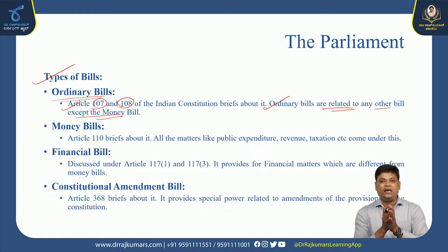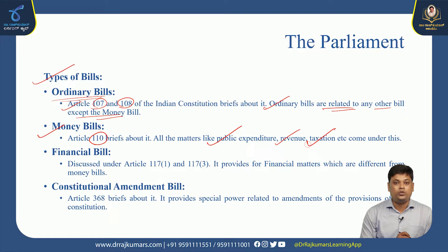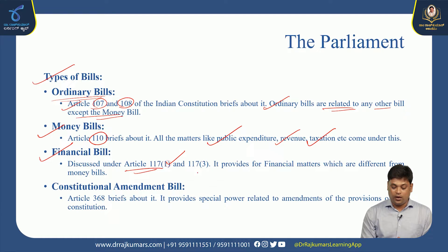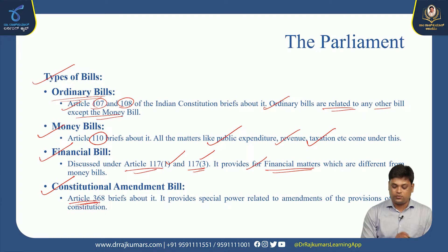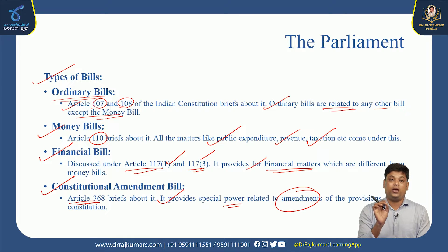The second type is the money bill, covered under article 110, which deals with matters like public expenditure, revenue, and taxation. The third is the financial bill, discussed under article 117, clause A and article 117, clause 3, covering financial matters different from money bills. The fourth is the constitutional amendment bill under article 368, which provides special power for amendments to the Constitution.